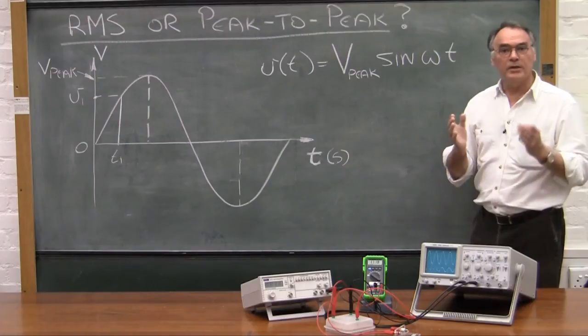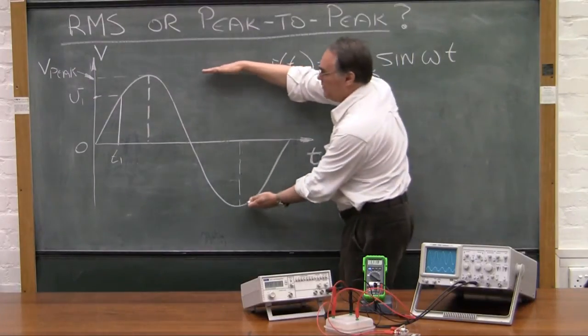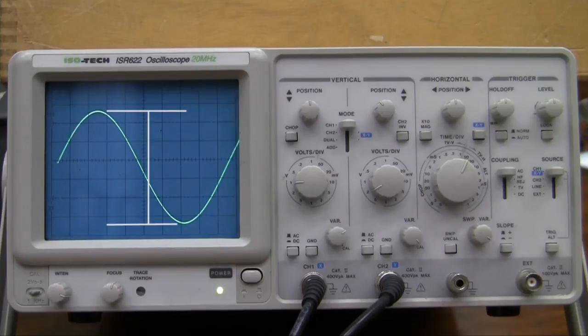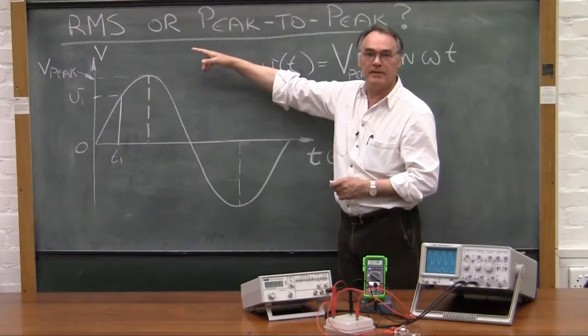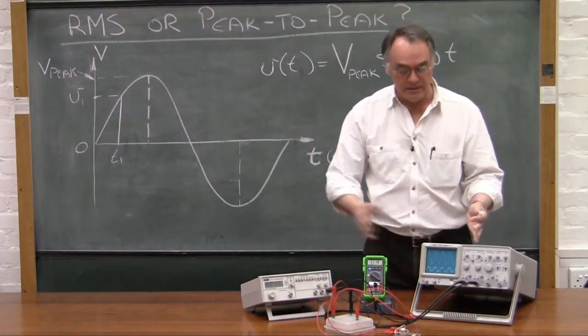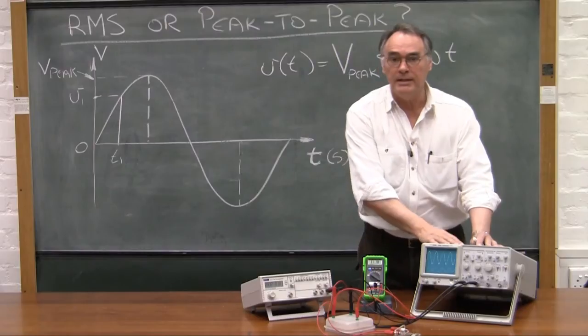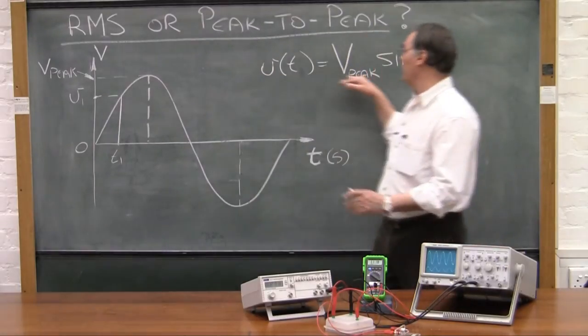Now when you're doing oscilloscope work, it's much easier to find the peak-to-peak value than it is to find the RMS value. If you are working on an oscilloscope like this, then here you'll be able to find the peak-to-peak value quite easily, and from that you can calculate the peak value.